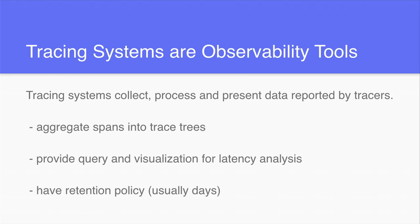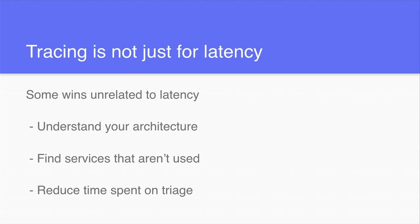Tracing isn't just for latency. A lot of people use it because there are neat things you can do when you can see the structure of how your requests go across the network. One is understanding your architecture — not how you think it is, but how it actually is. When people start using tracing systems, one of the first cheap wins is: 'Oh my gosh, that thing is accidentally calling that? Let me stop that.' Or: 'It's doing it twice.' From a troubleshooting perspective, it's another tool to reduce triage time — one trace tells you all the information about things that went across the app and which ones were erroring at the time.